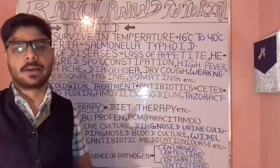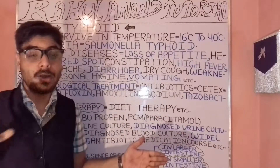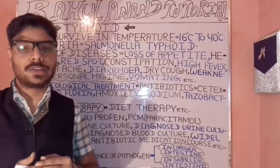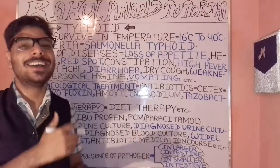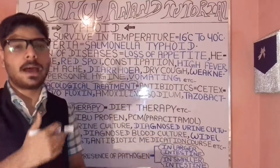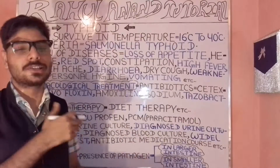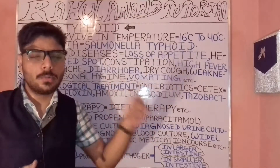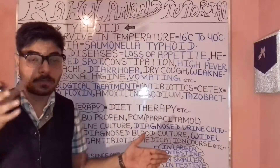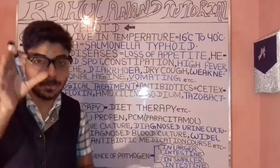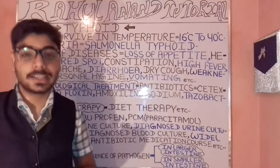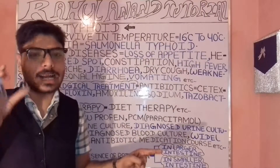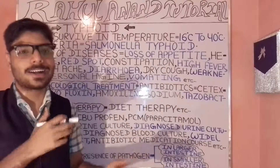In rigor fever, the temperature can reach up to 105 degrees Fahrenheit. Other symptoms of typhoid include diarrhea — which is a state of frequent discharge of fecal matter — and constipation, which is inversely proportional to diarrhea.